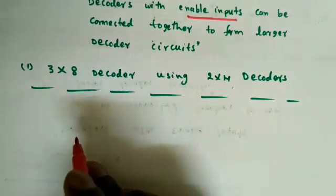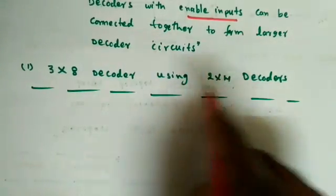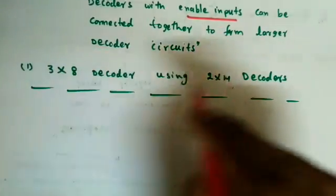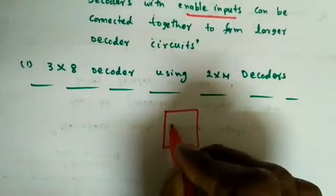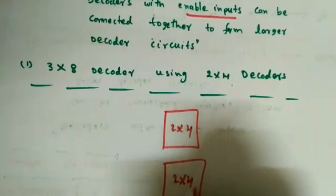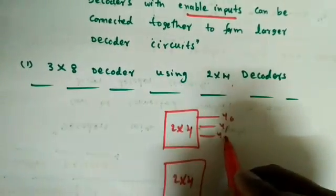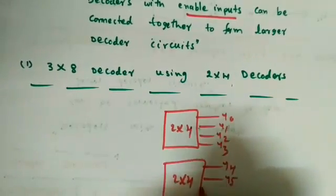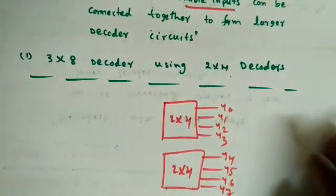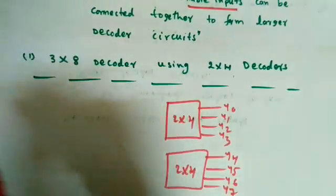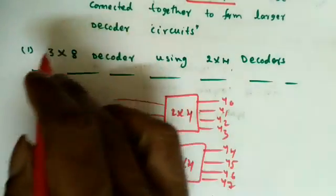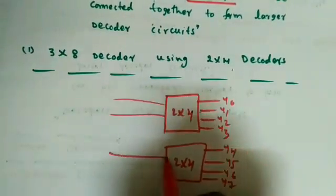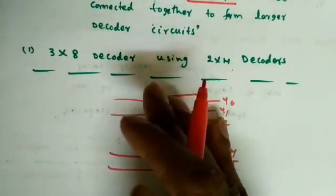We'll see how to construct a 3x8 decoder using 2x4 decoders. To implement a 3x8 decoder, each 2x4 gives only 4 outputs, so I need two 2x4 decoders to get 8 outputs: y0, y1, y2, y3, y4, y5, y6, y7. The 3x8 decoder takes 3 inputs, but each 2x4 takes only 2 inputs — so the third input becomes an enable input.